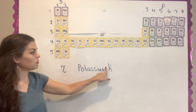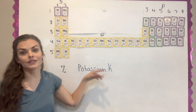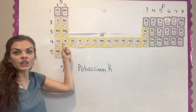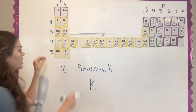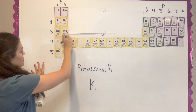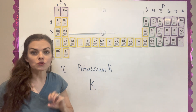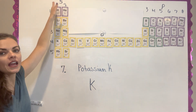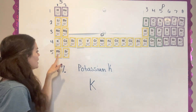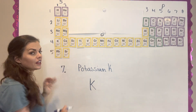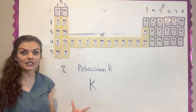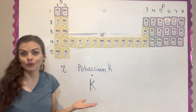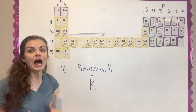So for potassium — K — we're going to write its dot structure and find where it's at. K is right here. I just realized I've had these backwards the whole time, so we're just going to fix those. Potassium is in the group one column, so it has one valence electron. You just write the symbol K and put one dot above it.